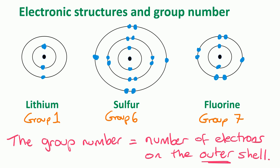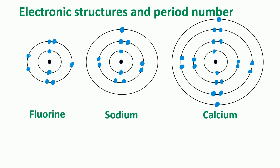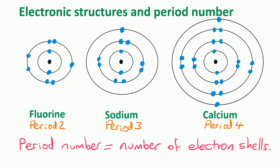The second important point is how the electronic structure relates to the period number. Fluorine is in period 2, sodium is in period 3, and calcium is in period 4. The period number equals the number of electron shells for that atom. Please remember to like and subscribe — thank you for watching.